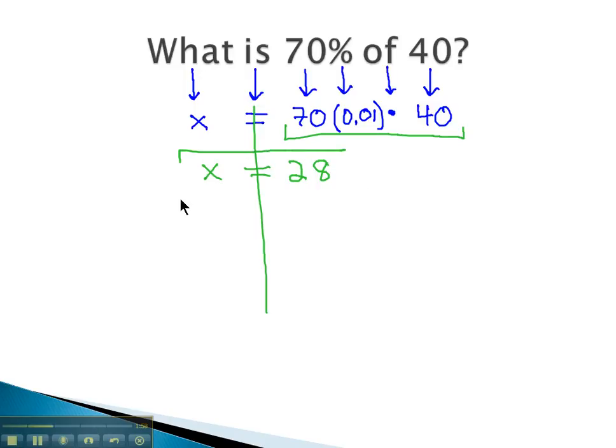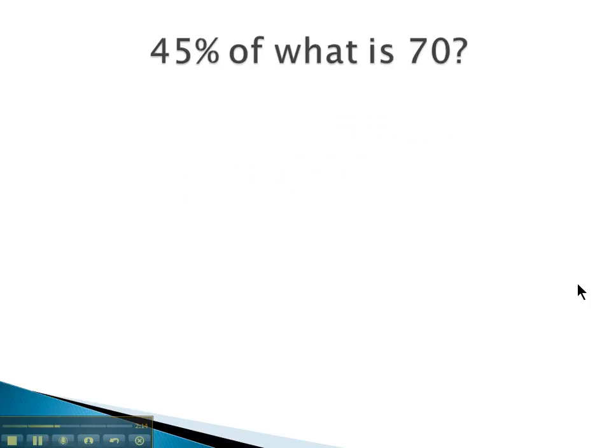This problem's nice in that there's no more solving to do after we simplify each side of the equation. What is 70% of 40? 28 is 70% of 40. Let's take a look at one more example, where we solve the percent problem by translating the key phrases.